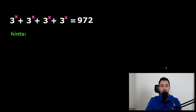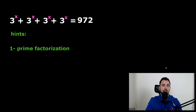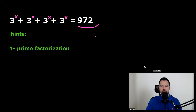So I will give you hints. My first hint would be prime factorization. By that I mean write this side as two times three — like how many threes there are, four or five.